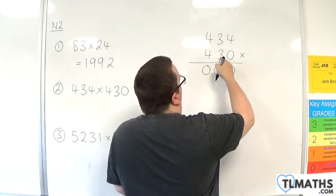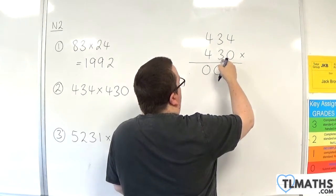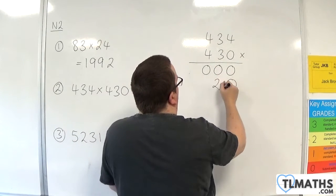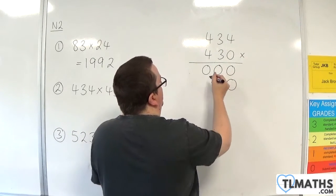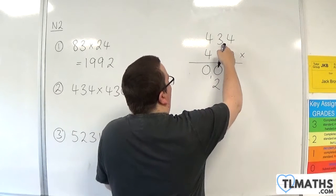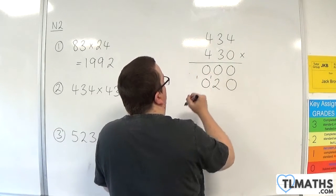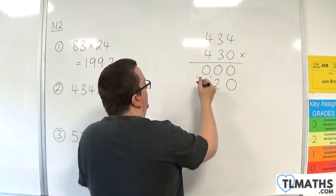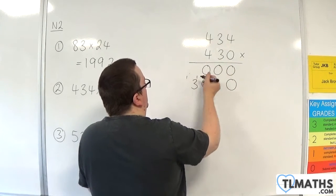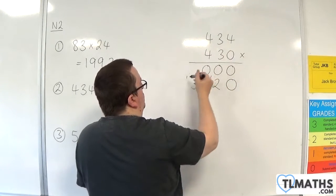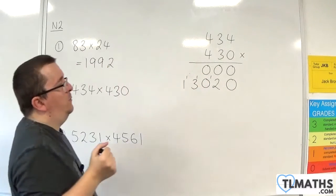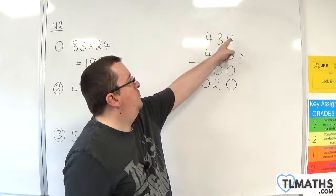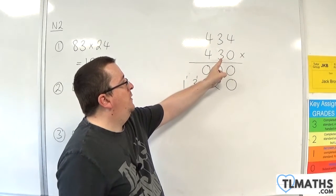We're then going to be multiplying the 434 by 30, so we need to add in a 0. 3 times 4 is 12, so put in the 2, carry the 1. 3 times 3 is 9, add the 1 is 10, so put in 0, carry the 1. 3 times 4 is 12, add on the 1 is 13. Put the 3, carry the 1. And 3 times 0 is 0 plus the 1, so the 1 just drops down. So we've multiplied it through by 0, then by 30.